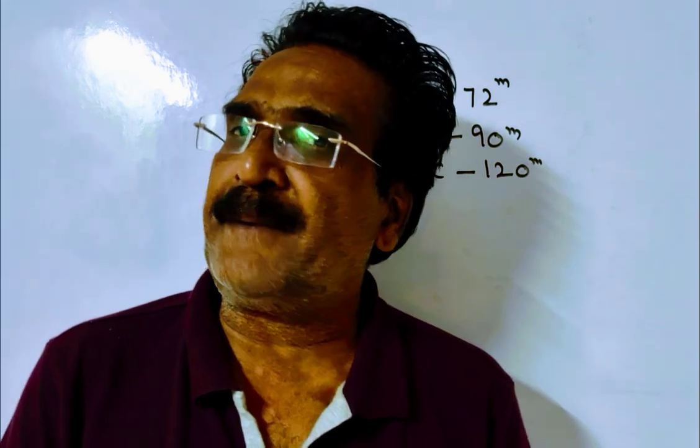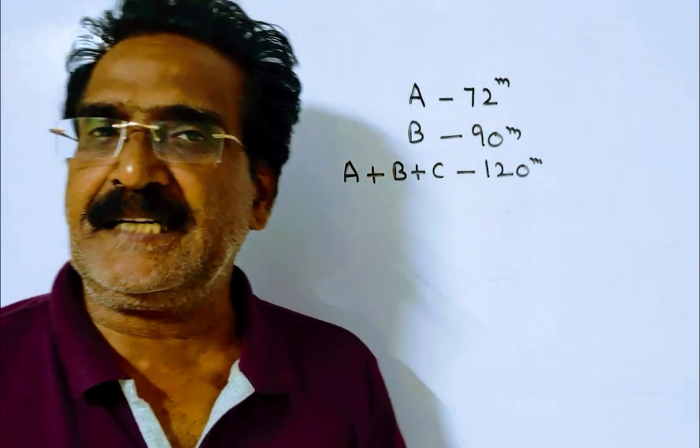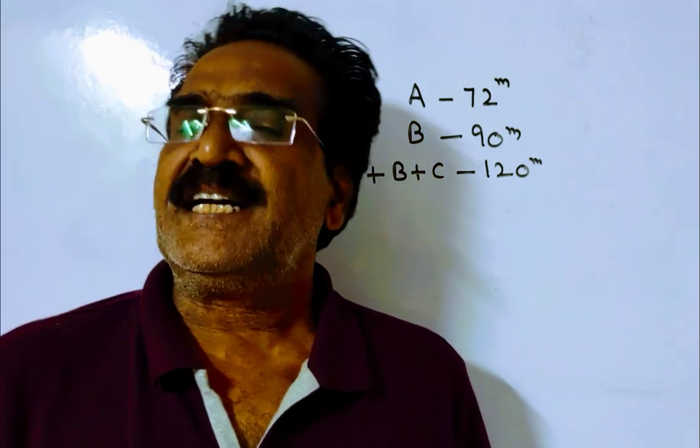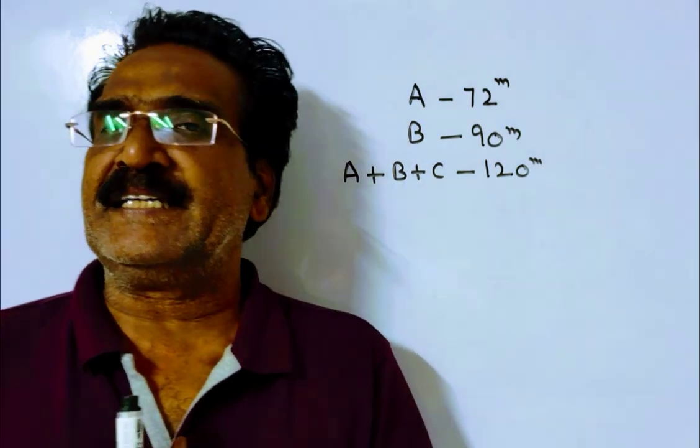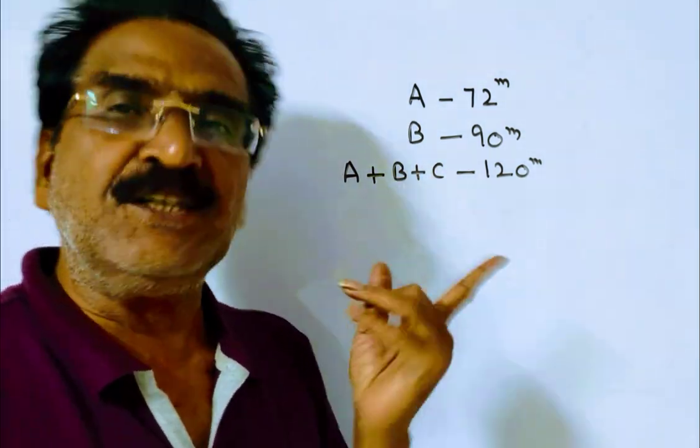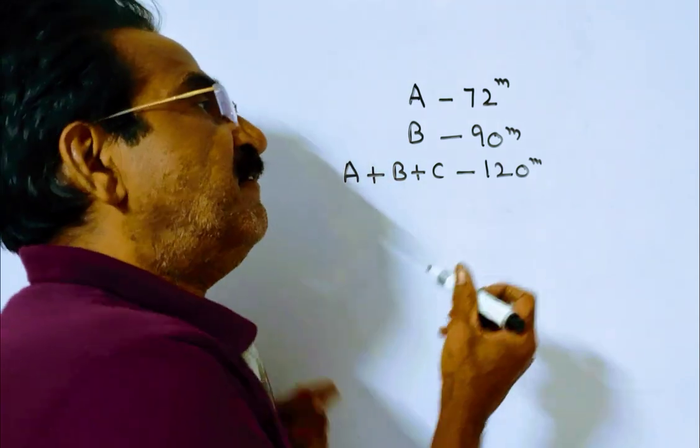A and B are filling pipes and they can fill a tank in 72 minutes and 90 minutes respectively. C is an emptying pipe and A plus B plus C together can fill the tank in 2 hours, that is 120 minutes.